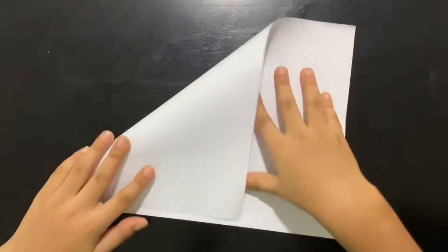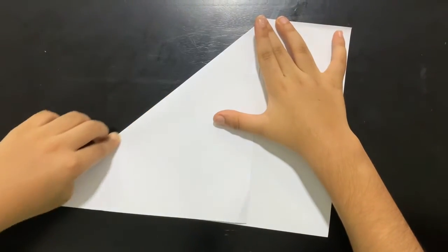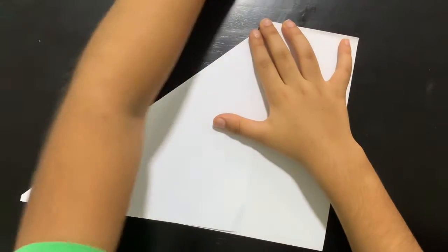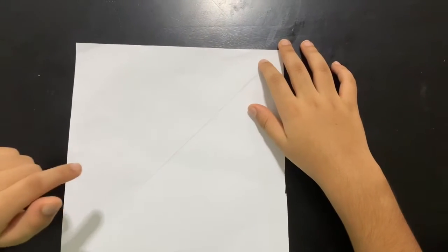To make it you need origami paper. If you don't have origami paper, just use printed paper and make it into a square, and cut the excess out. When you're ready with the square, you're ready to go.